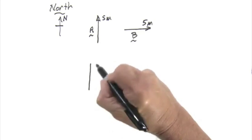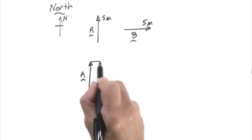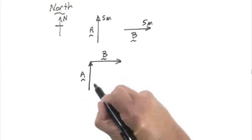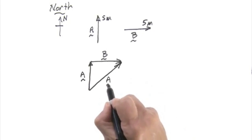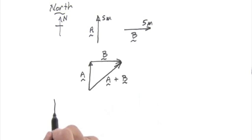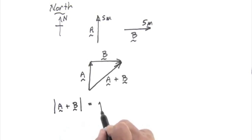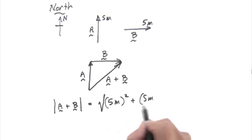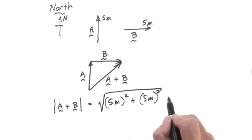OK, let's go five meters north, turn a right angle, then five meters east. Our new displacement is northeast of our starting point. Pythagoras' theorem gives us the magnitude of the new displacement. The magnitude of A plus B is square root of five meters squared plus five meters squared equals seven meters.